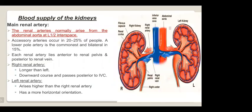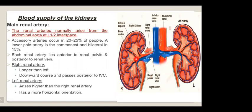Regarding blood supply, the main renal arteries normally arise from the abdominal aorta at the L1-L2 interspace. Accessory arteries may be present in 20 to 25 percent of the population; a lower polar artery is the commonest and is bilateral in 15 percent of cases. The right renal artery is usually longer with a more downward course and passes posterior to the IVC. The left renal artery is usually slightly higher than the right and has a more horizontal orientation.